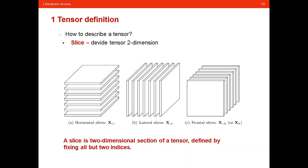To take a step further for higher-order tensors, we can divide a tensor in two dimensions using slices. A slice is a two-dimensional section of a tensor obtained by fixing all but two indices. For a tensor of order three, we have a horizontal slice, a lateral slice, and a frontal slice — each defined by fixing one index and letting the other two vary.